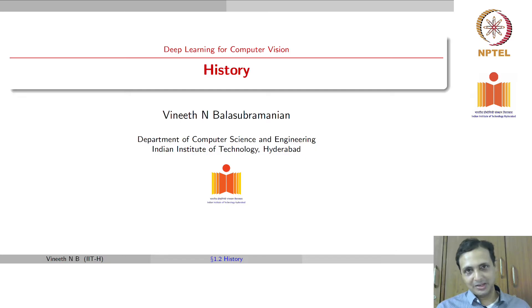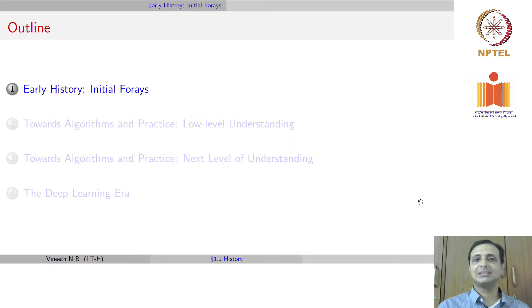Last lecture, we gave an introduction to the course and now we will actually get started with the contents. We will review the history of computer vision over the last few decades to give a perspective of where the field started from and how it has evolved. This lecture is structured into four parts.